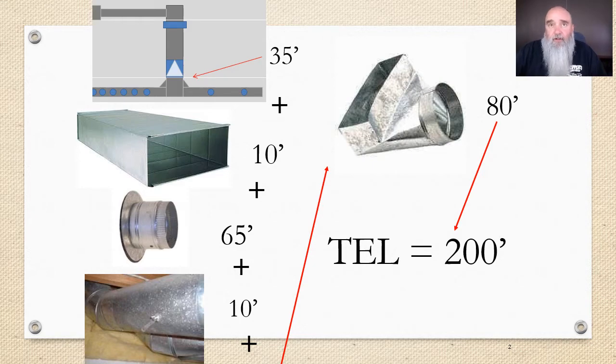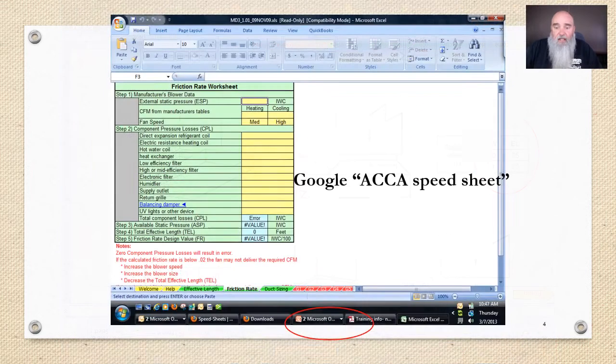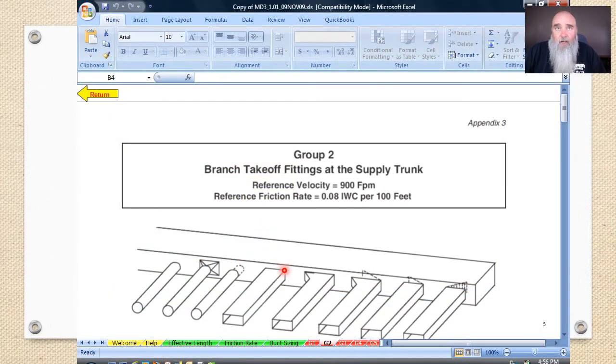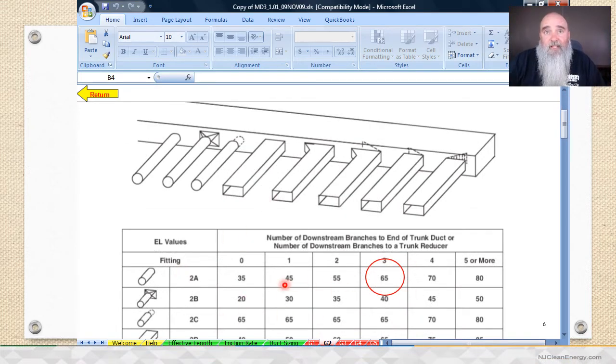We have some charts that you can find on the Manual D speed sheet or look up in the book, and it'll tell us what these lengths are. This is the Group 2 diagram, and below it'll show us what those ELs are.